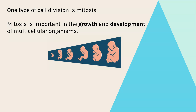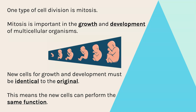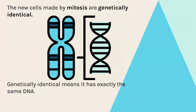Mitosis is one type of cell division and it's really important for growth and development of multi-cellular organisms like plants and animals. New cells that are grown must be identical to the original if they're going to be replacing or adding to existing cells, so that these new cells perform exactly the same function. When we say identical, we mean genetically identical — meaning inside the nucleus they have exactly the same DNA, so the same chromosomes with the same genes and alleles on them.